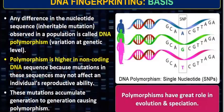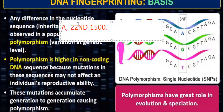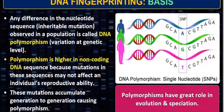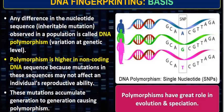For example, suppose you have a population A which has a SNP at chromosome 22, at position 1500. In that position, someone has adenine, someone has guanine, someone has thymine, and someone has cytosine. This is a polymorphism found in that population. If I have a population B, the SNP will be on a different chromosome, such as chromosome 16. This SNP does not affect the phenotype of the organism because it is non-coding — it is not in the coding region.